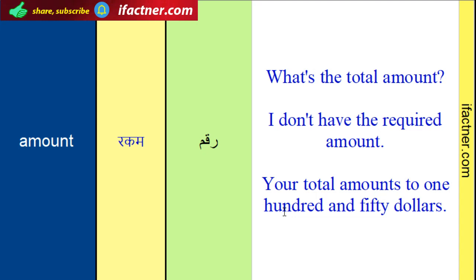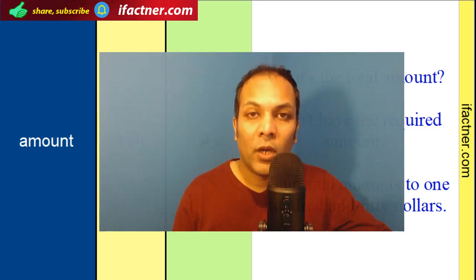Your total amounts to one hundred and fifty dollars. Toh hum ne dekha word 'amount' ka meaning hota hai rakam, paise. Sentences banaye hain: 'What's the total amount', 'I don't have the required amount', 'Your total amounts to one hundred and fifty dollars.'